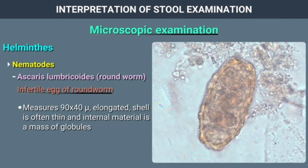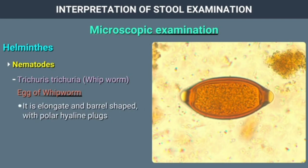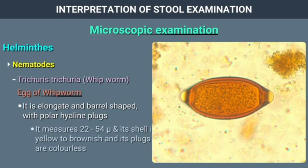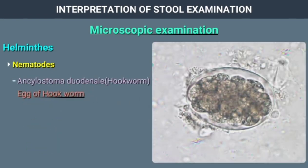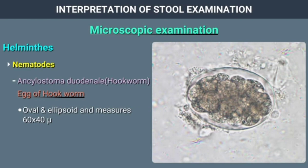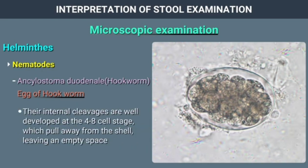Trichuris trichiura or whipworm egg is elongate and barrel-shaped with polar hyaline plugs. It measures 22 to 54 microns and its shell is yellow to brownish while the plugs are colorless. Ankylostoma duodenale or hookworm egg is oval and ellipsoid, measuring 60 by 40 microns. The shells are thin-walled, smooth, and colourless, with well-developed internal cleavages at the 4 to 8 cell stage.